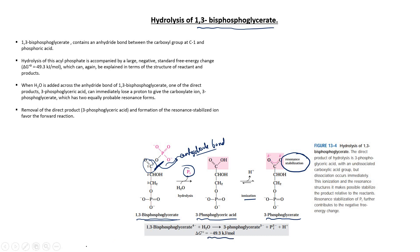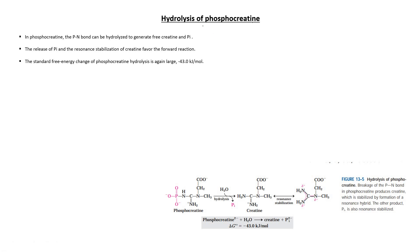Next is the hydrolysis of phosphocreatine. This is the structure of phosphocreatine. Phosphocreatine contains a P-N bond, and this P-N bond undergoes hydrolysis. When phosphocreatine is hydrolyzed, inorganic phosphate is released, and creatine is formed.